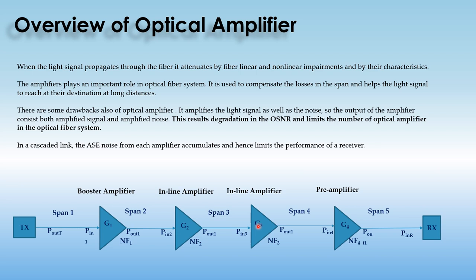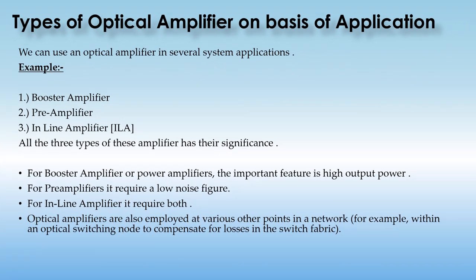Moving to the types of optical amplifier on the basis of application — we can categorize optical amplifiers into three categories. The first is the booster amplifier, the second is the preamplifier, and the third is the inline amplifier. All three types of optical amplifier have their own significance.